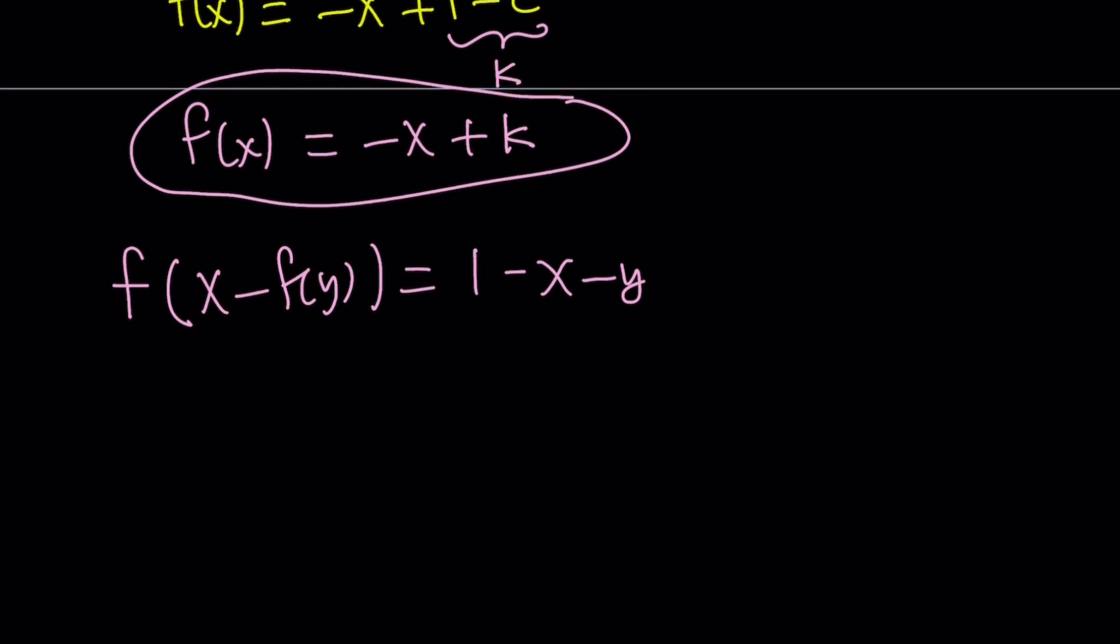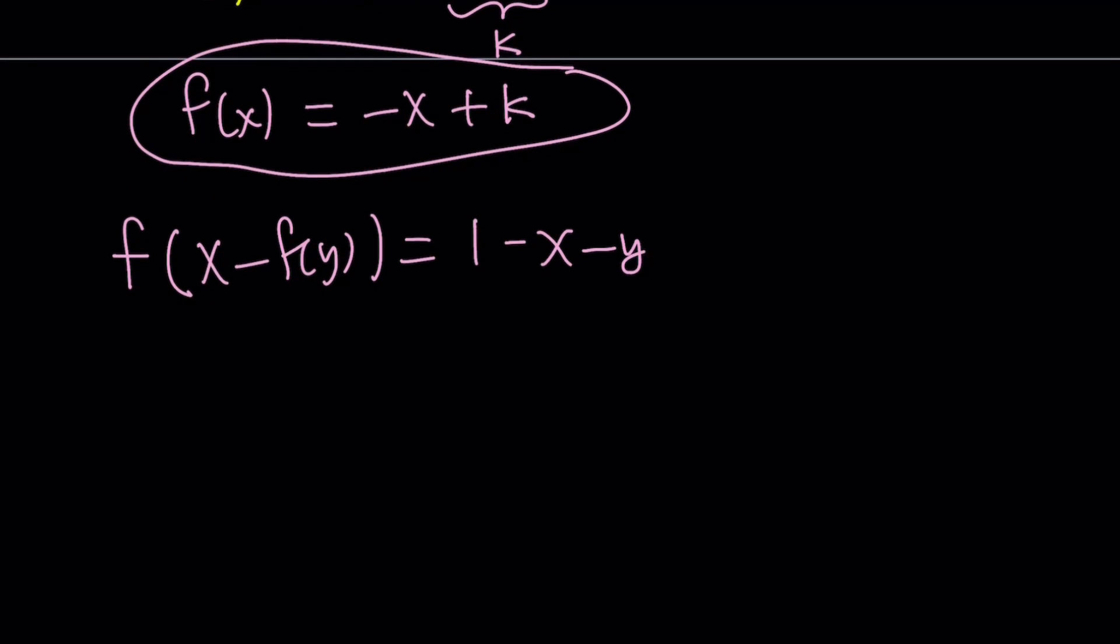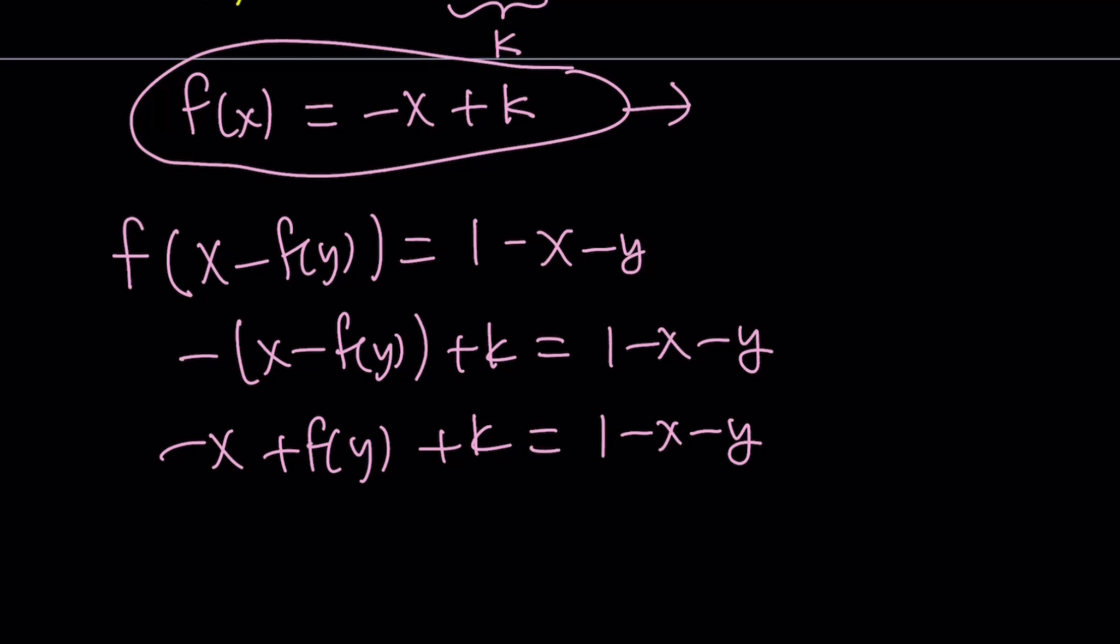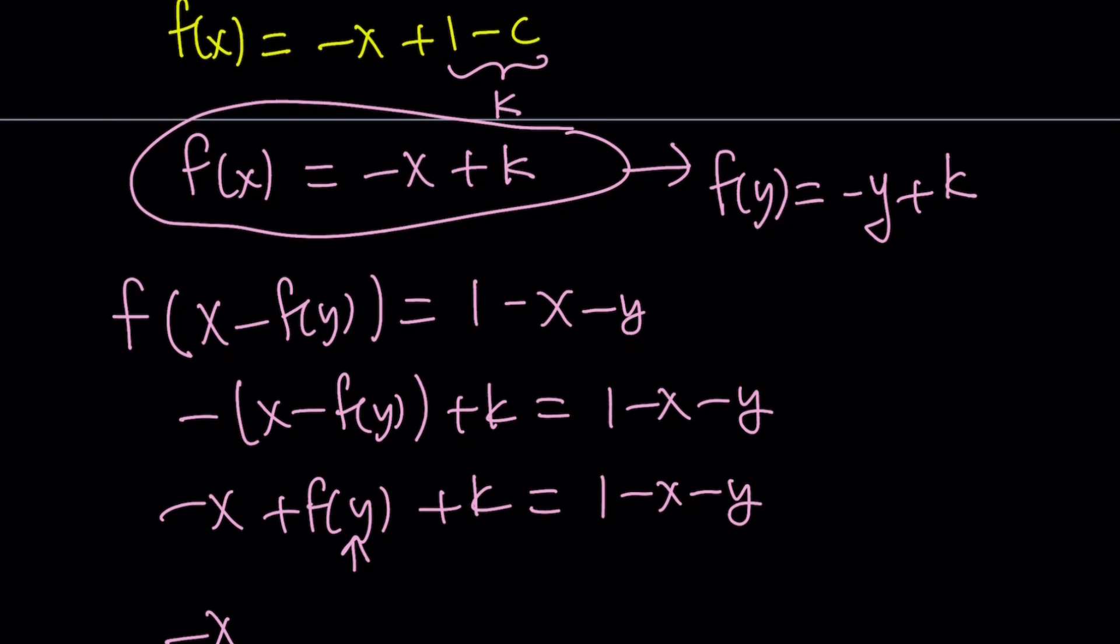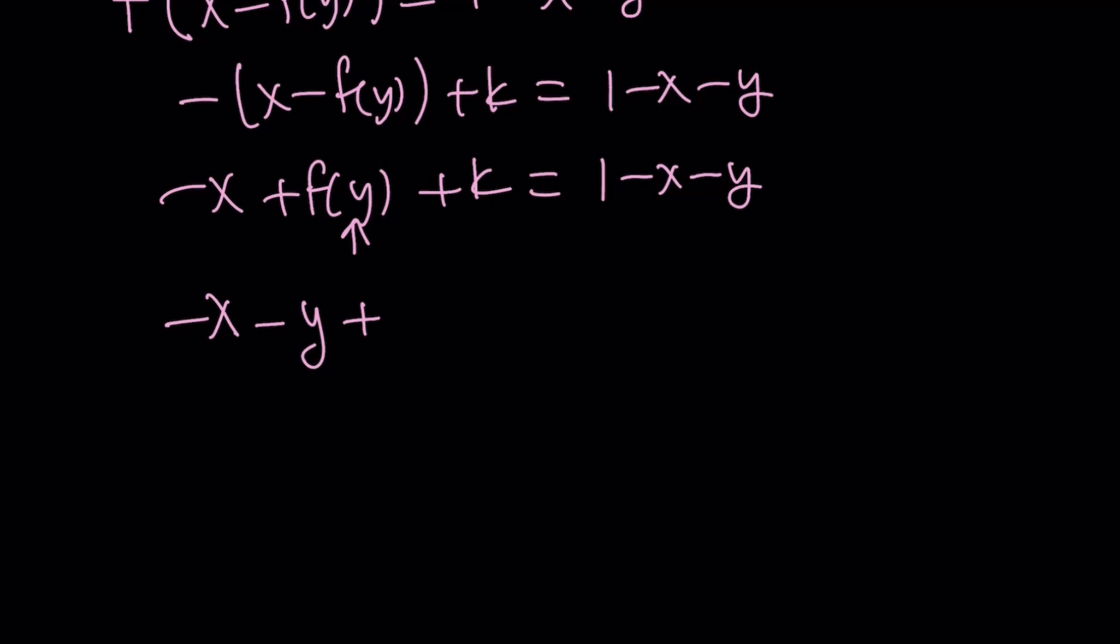Now we're going to go ahead and replace it. So let's see what we can do. So f basically takes the argument, negates it and adds k. So we're going to negate this argument and add k to it and that's going to equal 1 - x - y. Let's go ahead and expand it. -x + f(y) + k = 1 - x - y.